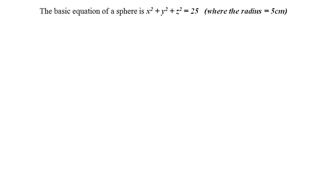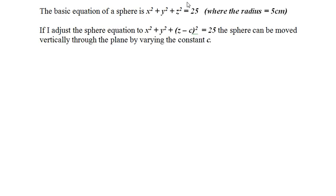The basic equation of a sphere is x² + y² + z² = 25. If I adjust the sphere equation to x² + y² + (z - c)² = 25, the sphere can be moved vertically through the plane by varying the constant c.